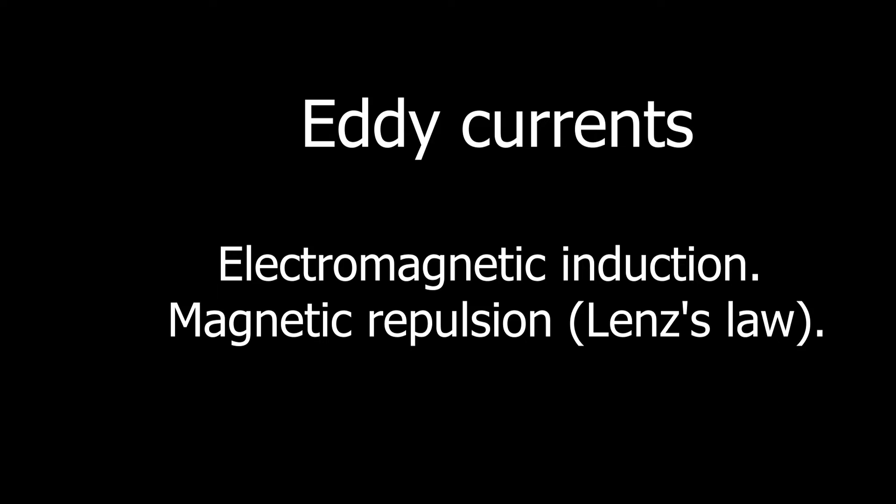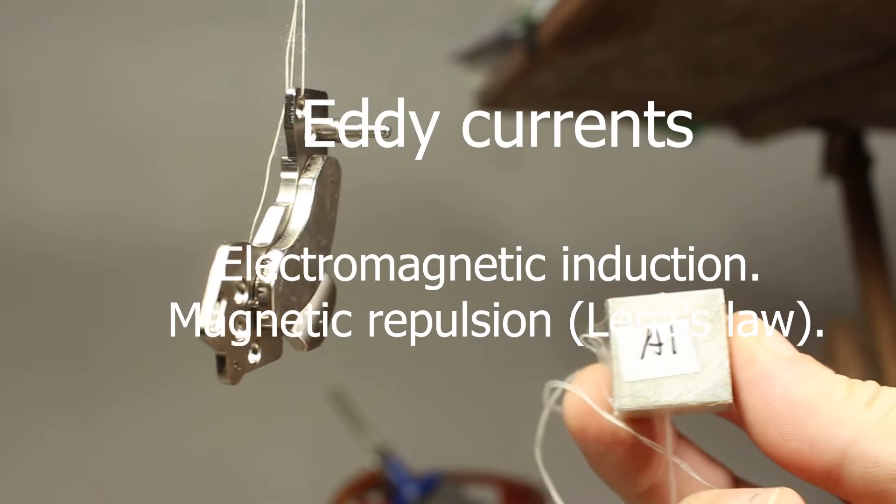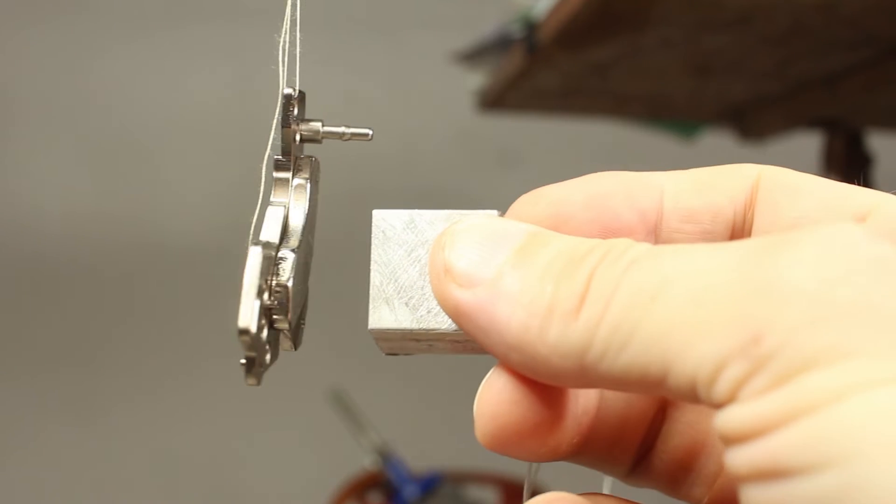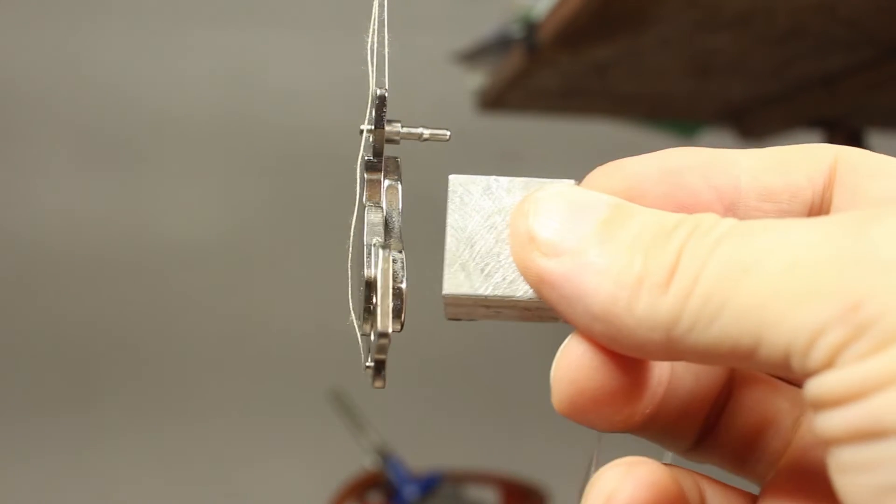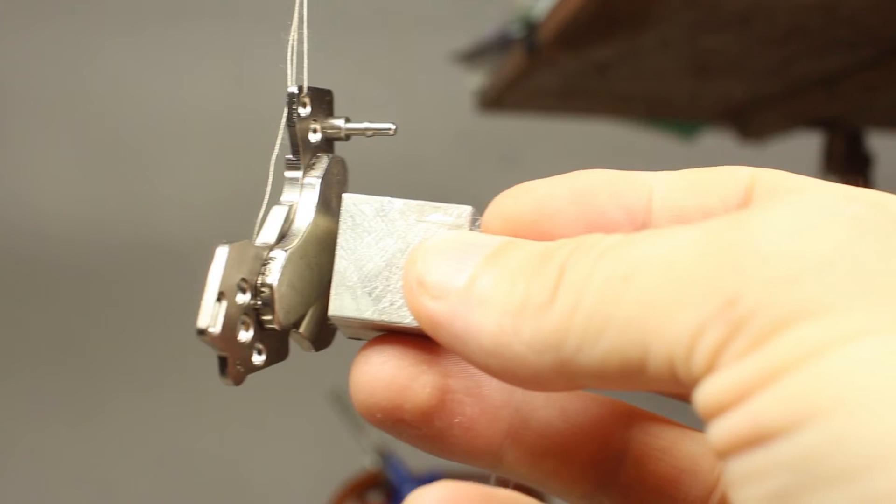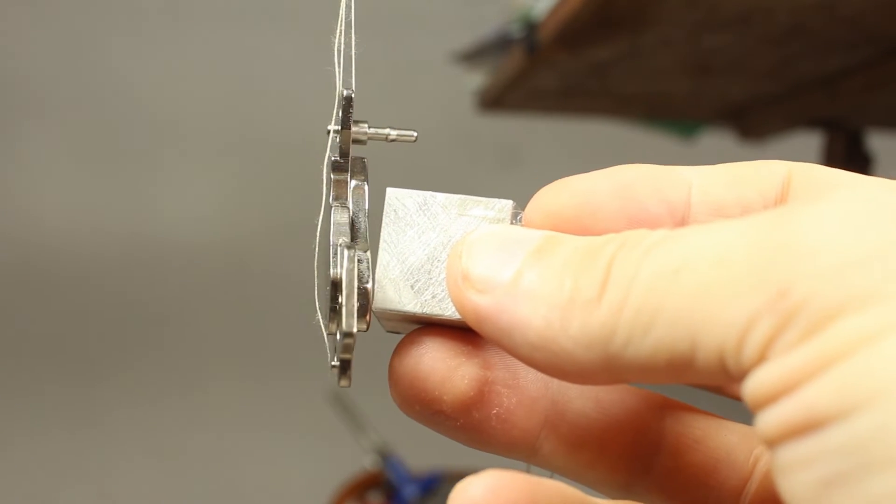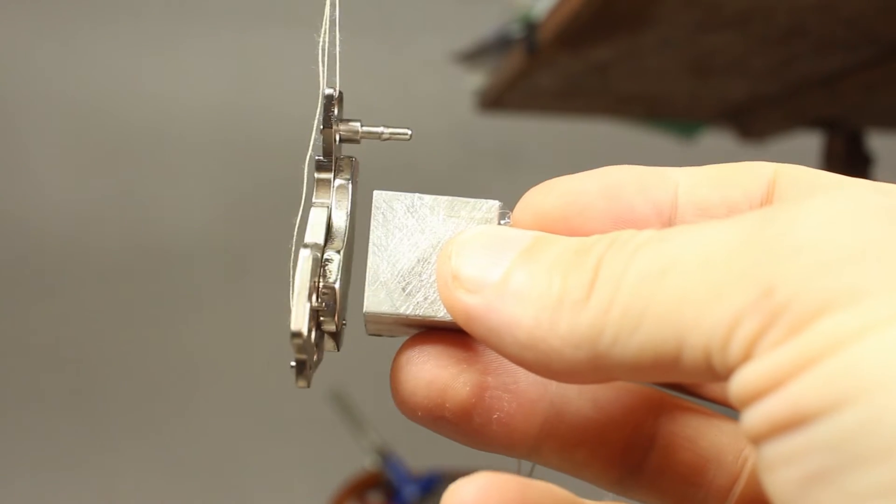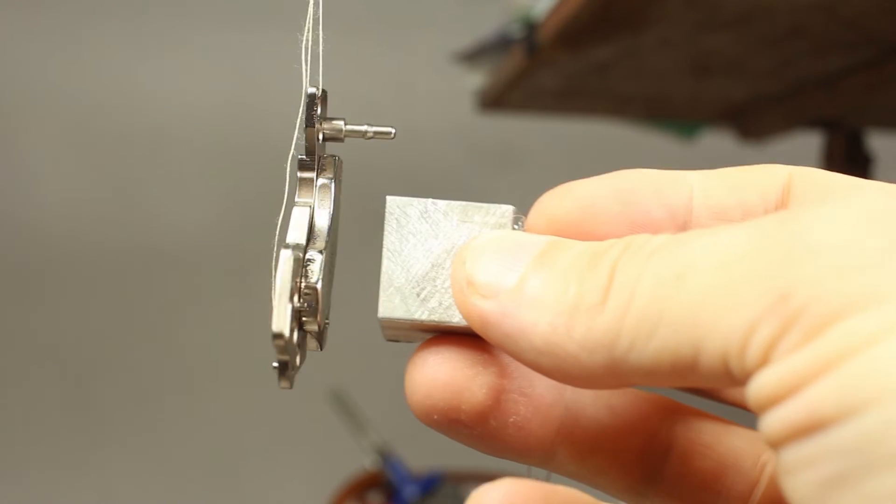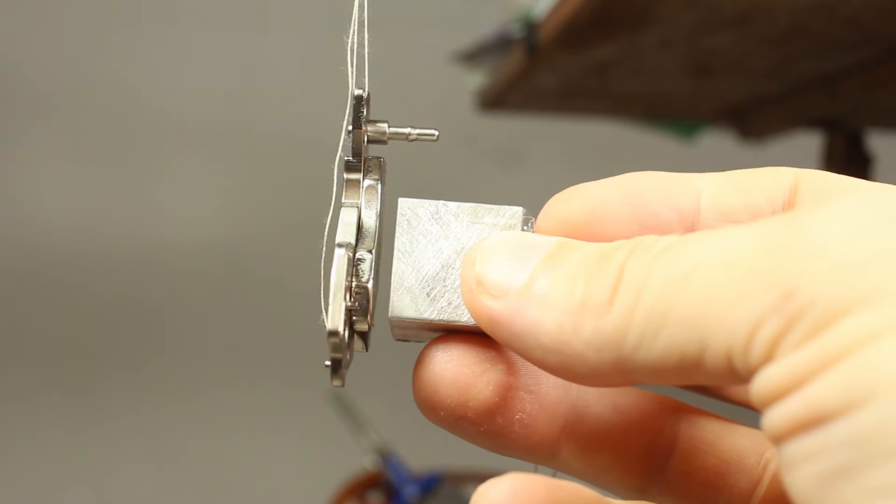But now, what about dynamic interaction? The same piece of aluminum. Supposed to attract it. But what it's doing? It's neither attraction nor repulsion. At least repulsion for sure. When I try to bring piece of metal close, the magnet goes away.